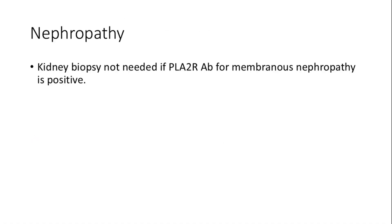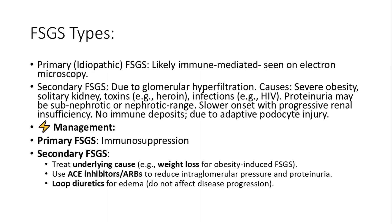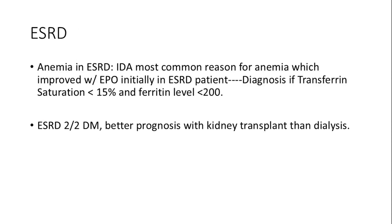For membranous nephropathy, a kidney biopsy is unnecessary if PLA2R antibodies are positive, simplifying the diagnostic process. Focal segmental glomerulosclerosis can be primary, in which we can see immune deposits on electron microscopy, or secondary to increased GFR as in obesity, toxins, and infections. Management focuses on immunosuppression for primary types and addressing underlying causes for secondary types, such as weight loss or using ACE inhibitors.